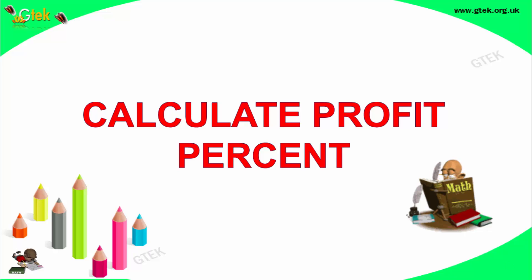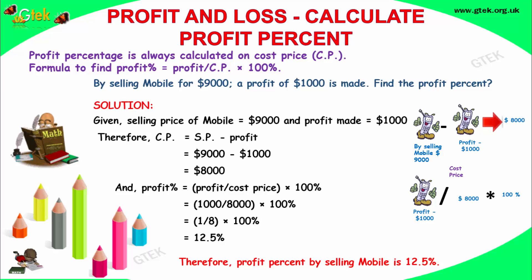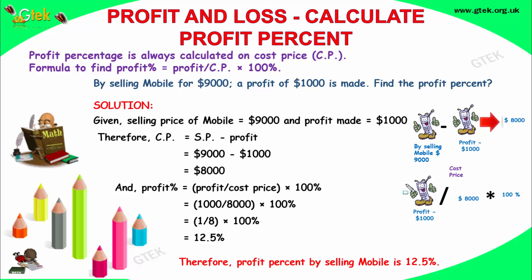Welcome to Gita Company. Now we are going to talk about calculating the profit percentage. Profit percentage is always calculated based on the cost price. The formula to find the profit percentage is: profit divided by the cost price, multiplied by 100.